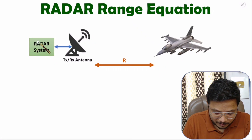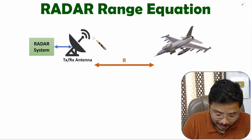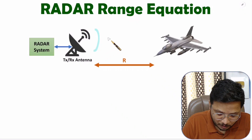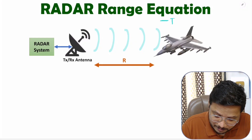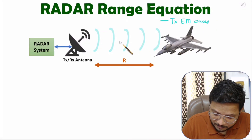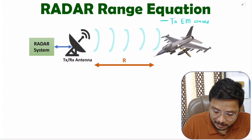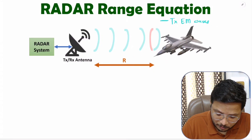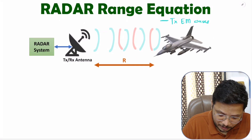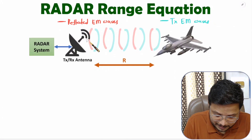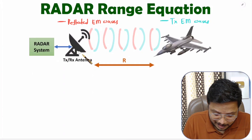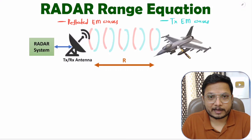You can observe here a radar system connected with a transceiver antenna. This antenna will be transmitting EM waves into space. Once those EM waves strike an object, there will be reflected EM waves — shown here in red color. Once the reflected EM waves come back to the radar, the radar can identify the range of the object.